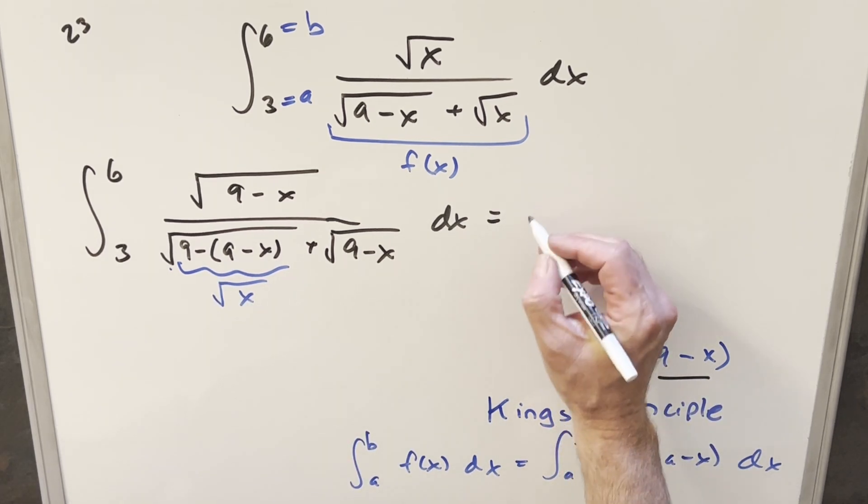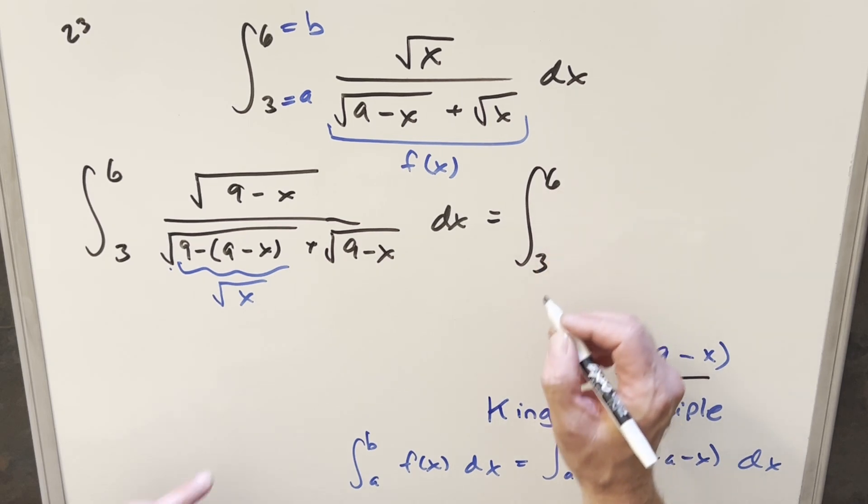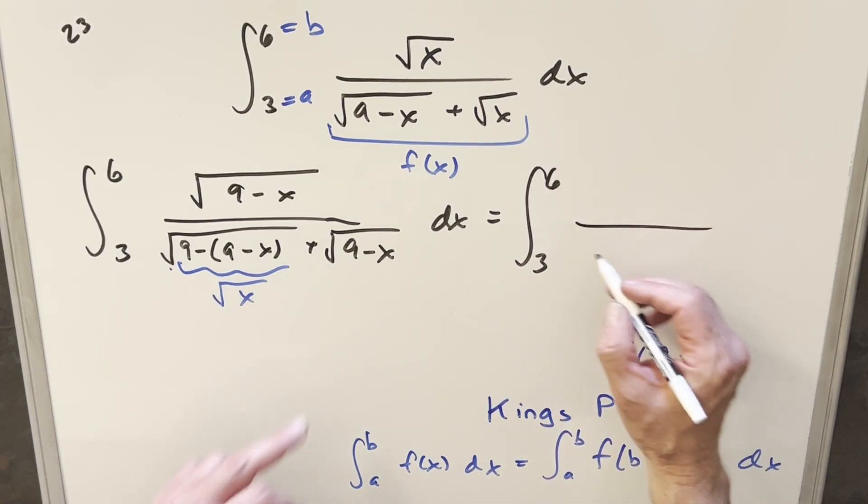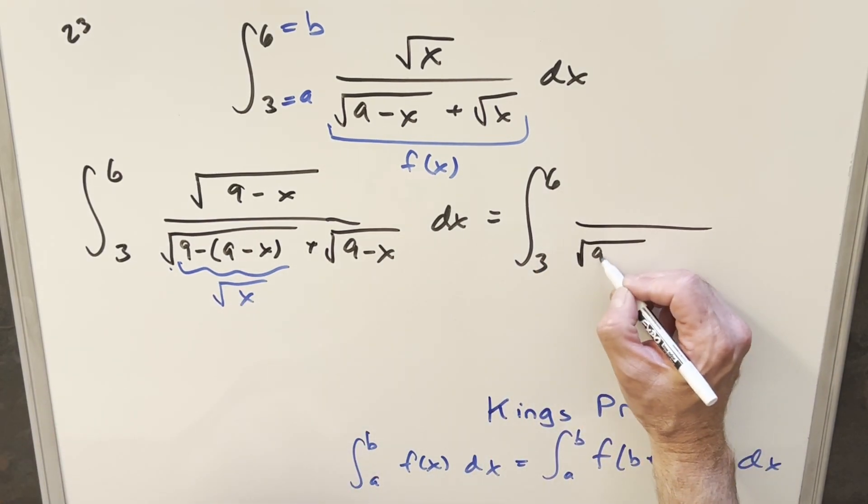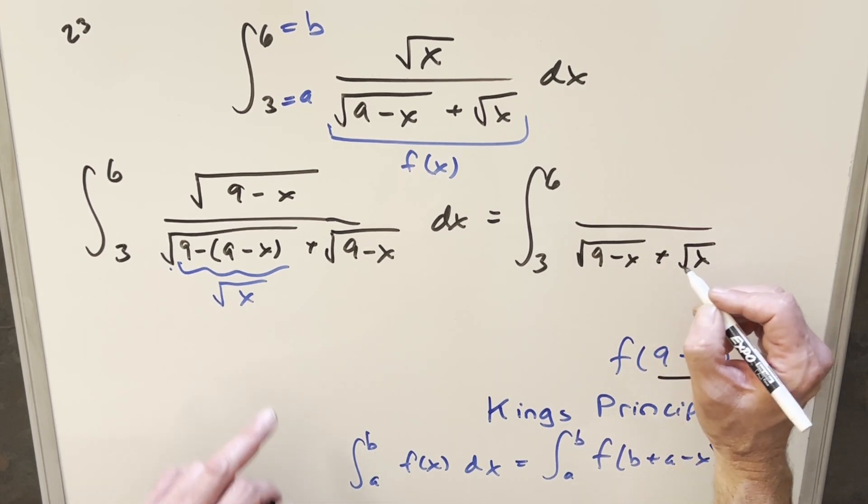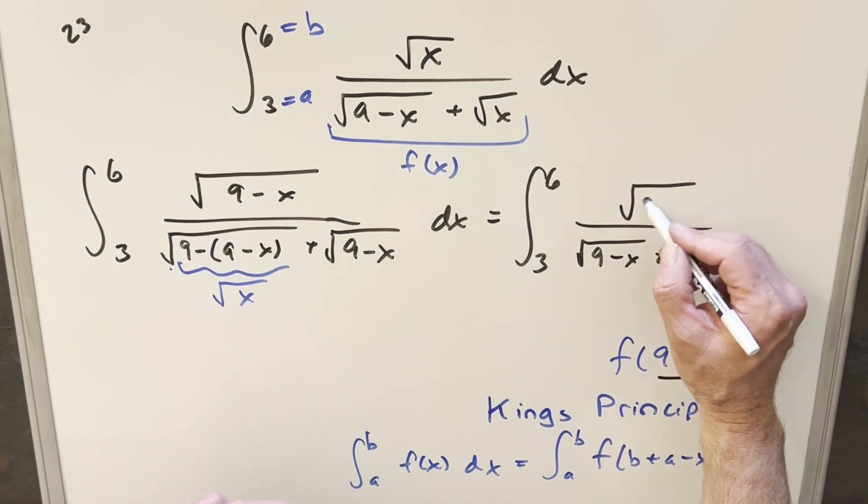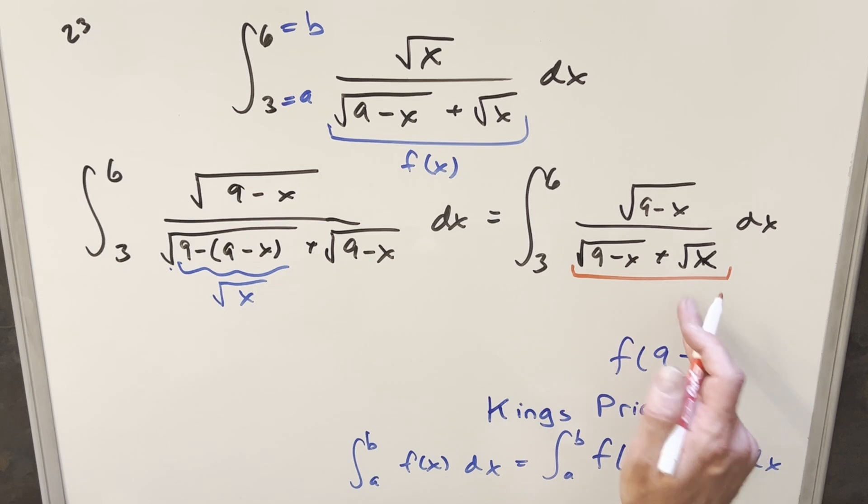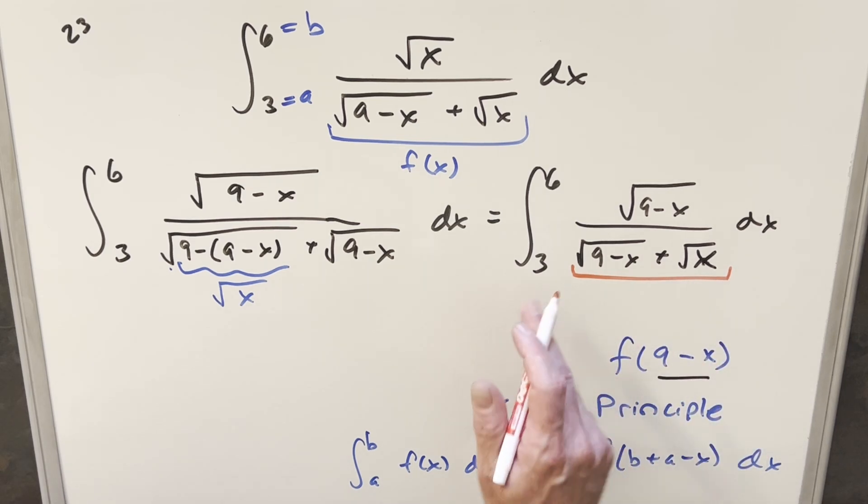So then just making it clear with the rewrite, we have the same bounds. Let's change the order on this. Okay, so we'll put this one first, square root of nine minus x plus this is now square root of x. We have this right here. Now comparing to our original integral, we've got the same exact denominator, same bounds.